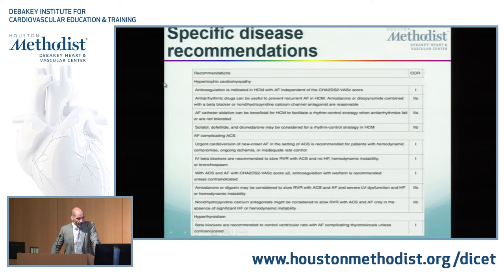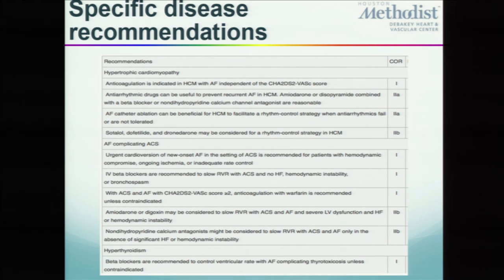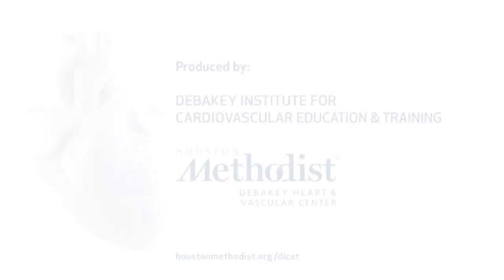A few final points: certain conditions do not follow the CHADS-VAS scoring system. Hypertrophic cardiomyopathy has a higher risk of stroke than other AFib substrates for reasons we don't fully understand. If you have hypertrophic cardiomyopathy, anticoagulation is indicated independent of the CHADS-VAS score.